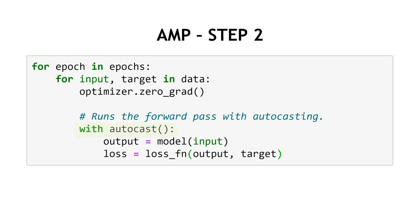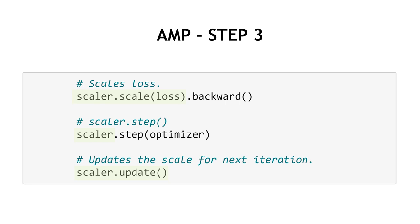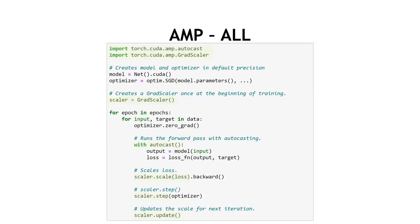For step two, we make use of autocasting, which automatically chooses the appropriate precision for GPU operations to improve performance while maintaining accuracy. For step three, we introduce gradient scaling. First we scale the loss to create scaled gradients for backward propagation. Then we invoke scaler.step, which first unscales the gradients and checks for any infinite or NaN values. If they're OK, it proceeds to call step on the optimizer. If they contain infinite or NaN values, the optimizer step is skipped and the scale factor is reduced. Conversely, if there's a run of successful steps with no issues, the scale factor is increased. Here are all the steps in one script: set up the gradient scaler, apply autocasting to the forward pass, and apply gradient scaling to the backpropagation — just a few lines of code.